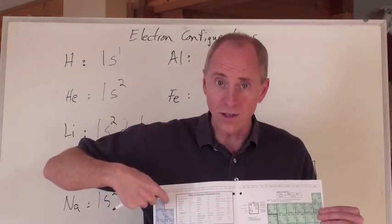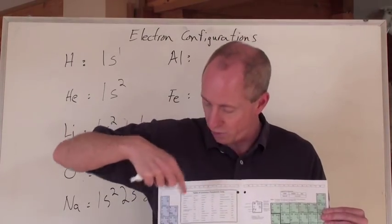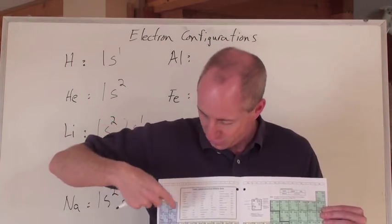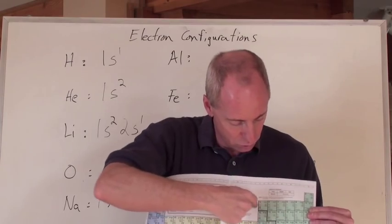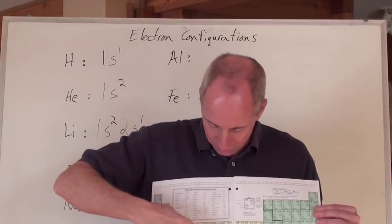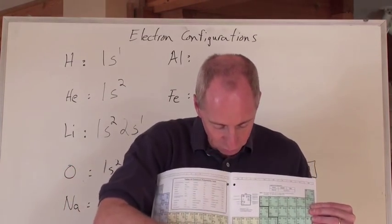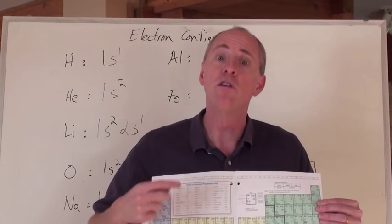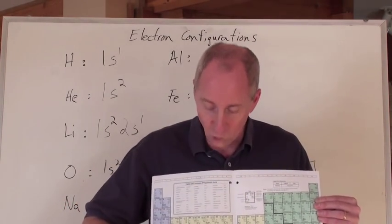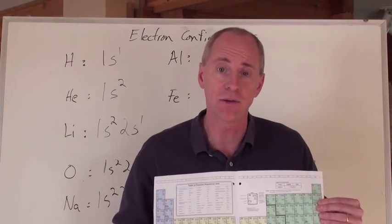So s starts at 1, right, and the p's start at n equals 2, but the d's start at n equals 3, so that means this f block down here is n equals 4, where it starts, so it's a 4f and a 5f down here.